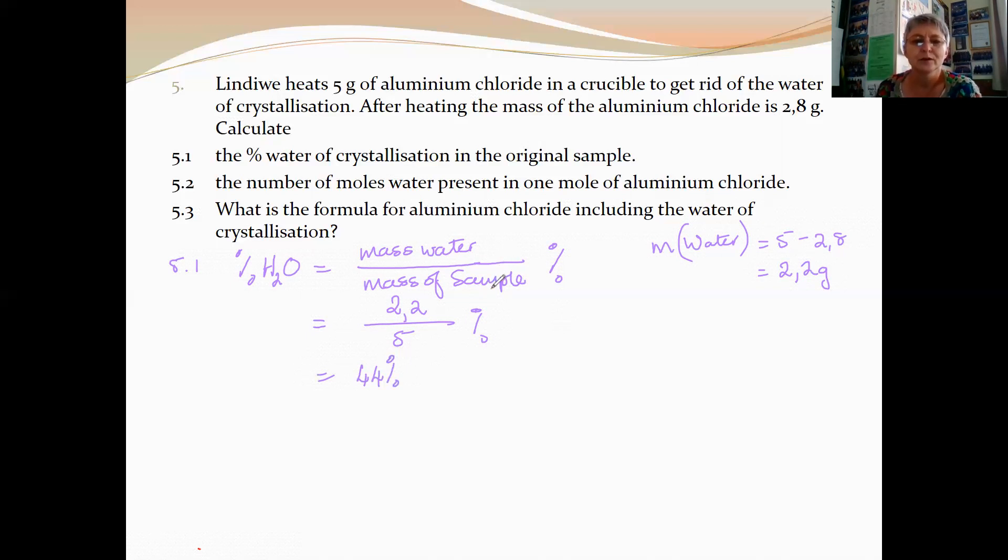Question 5.2 says, calculate the number of moles water present in one mole of aluminium chloride. Now, the mass of the aluminium chloride would be 2.8 grams, and the mass of the water is 2.2 grams. We must use these masses to get the mole ratio between the aluminium chloride and the water.